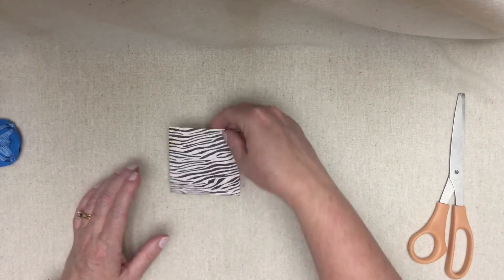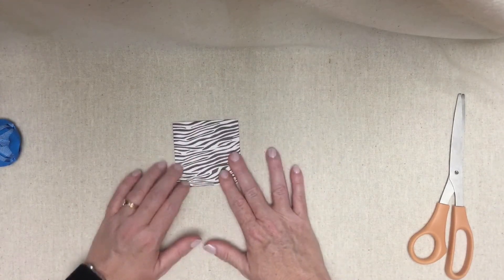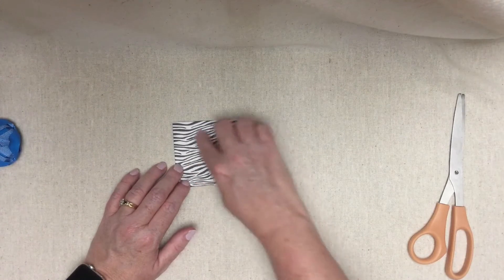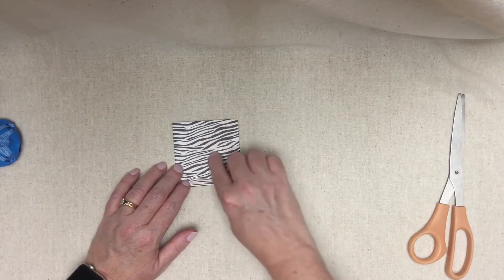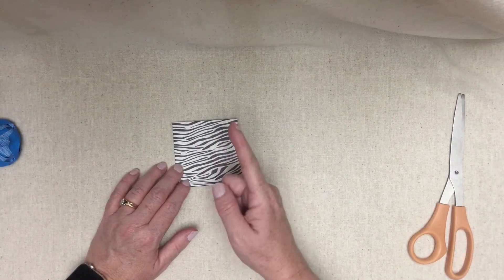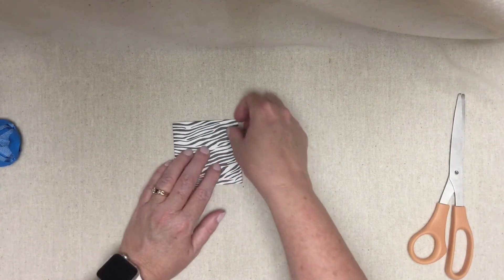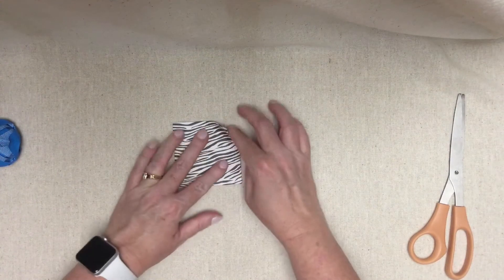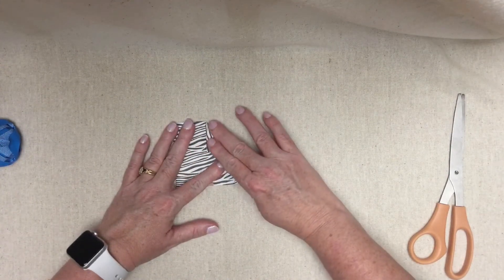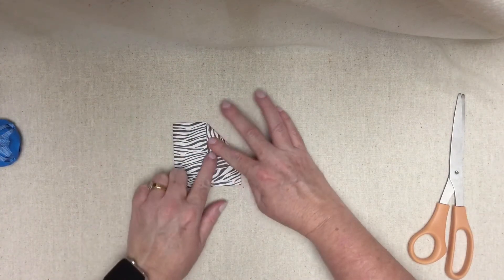The next thing to do is turn the paper over. And this is the base of the flower. We're going to, I'm sorry. This is the top of the flower. The other side is the base. Okay. This is going to look familiar. You're going to take one of the points and fold it in toward the center.